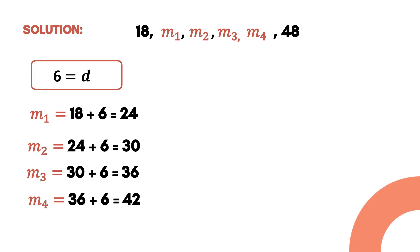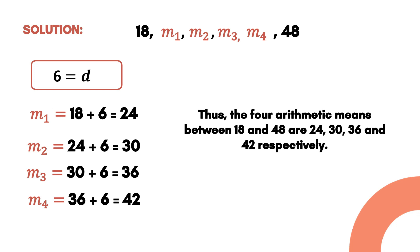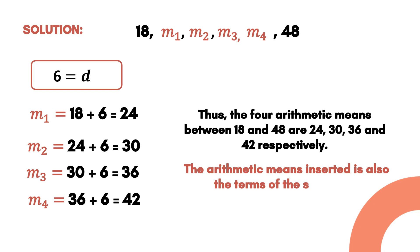So we have the values of the 4 arithmetic means: m₁ = 24, m₂ = 30, m₃ = 36, and m₄ = 42. Thus, the 4 arithmetic means between 18 and 48 are 24, 30, 36, and 42 respectively. Take note that the arithmetic means inserted are also the terms of our sequence.